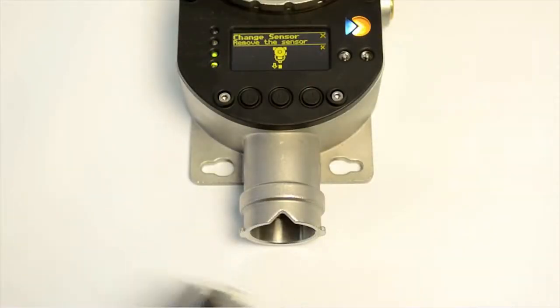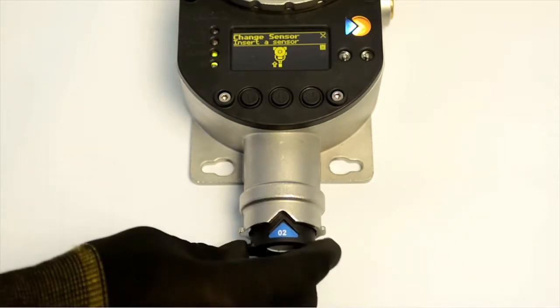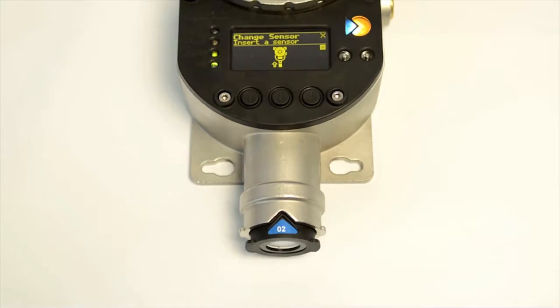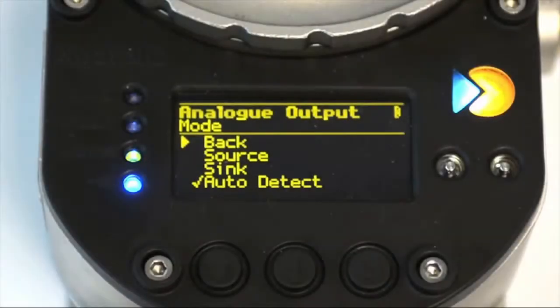X-Guard IQ avoids the bureaucracy and disruption of hot work permits which are not required to change a sensor. They're very quickly and easily removed and a pre-calibrated replacement sensor can then be slotted into place. With the new sensor installed and the detector back online, the old sensor can be taken to a safe environment for calibration.